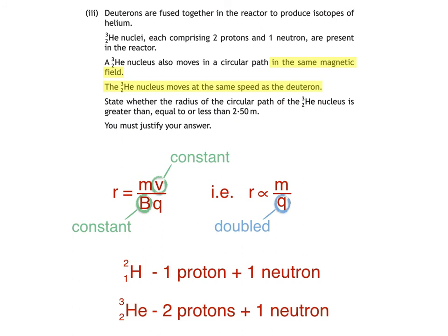The mass of the proton is very close to the mass of a neutron, so the fact that the helium-3 nucleus has an extra proton will mean that it has a greater mass than a deuteron, but certainly not double. Overall, the value of M over Q will be reduced, so the radius of the circular path will also be reduced.